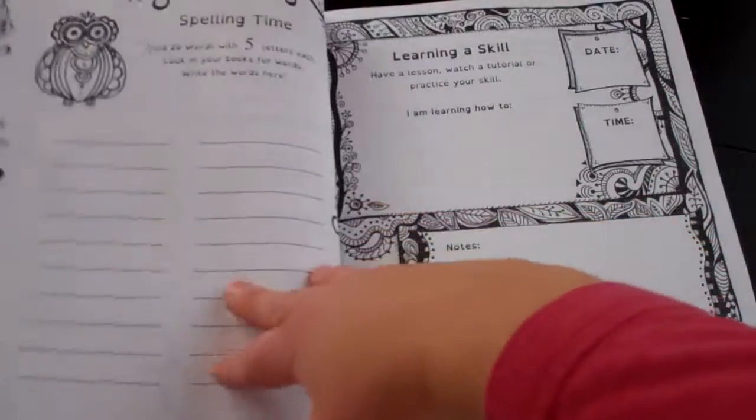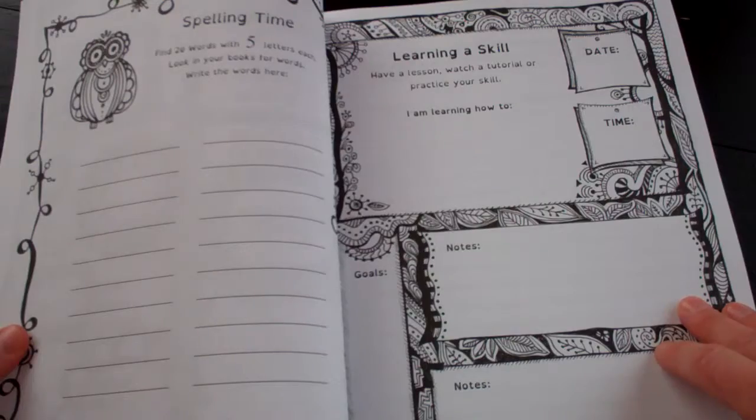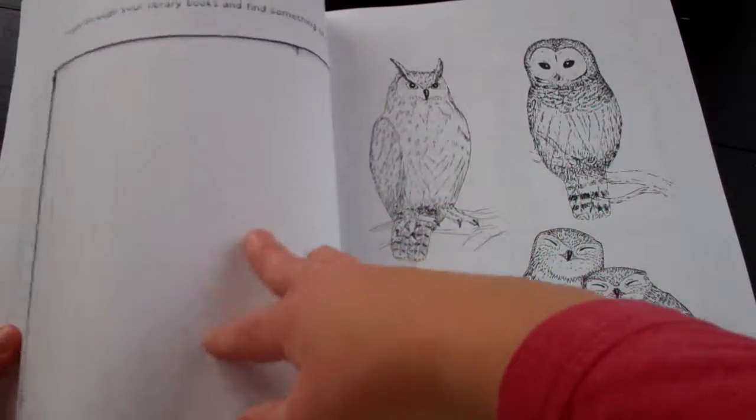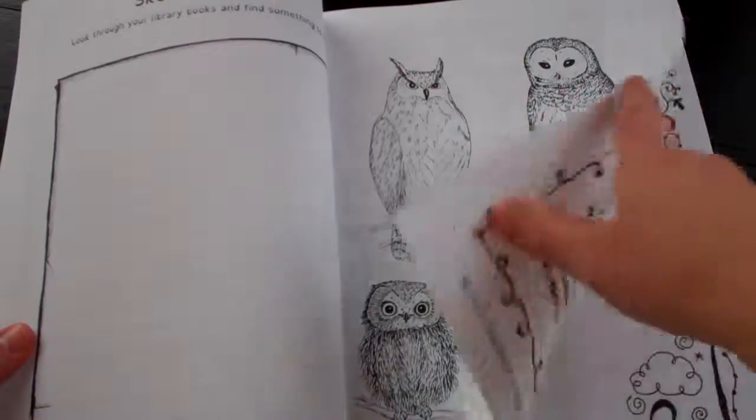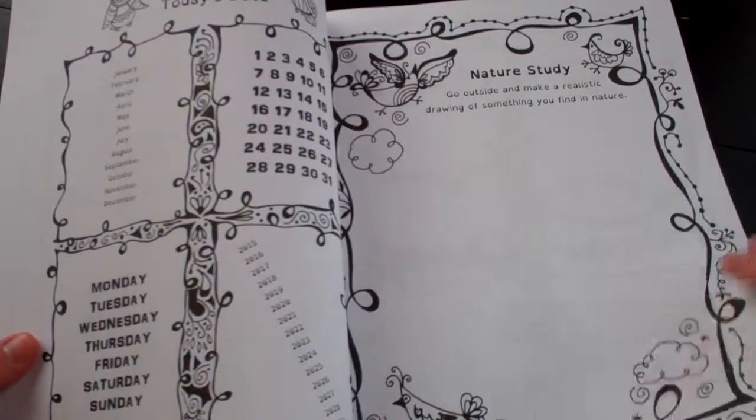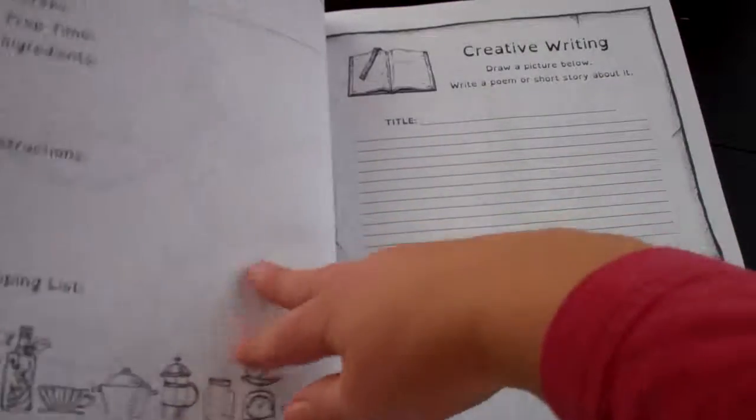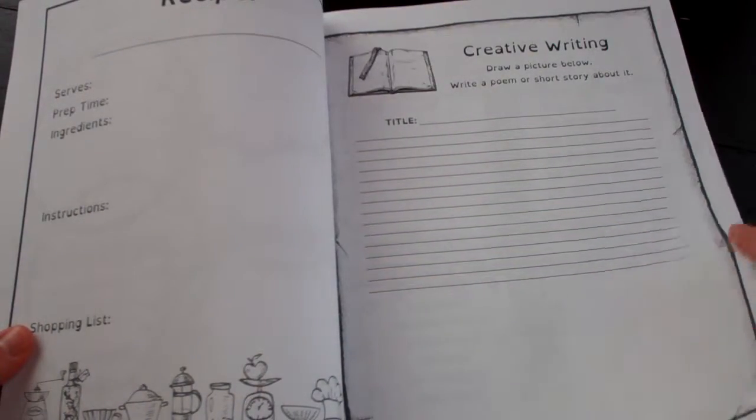So there's some creative writing or history in it. Spelling. Nature study, one of our son's favorite things to do is to be outside.